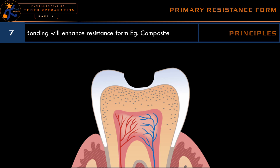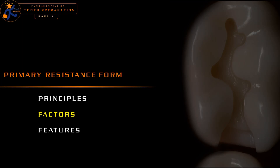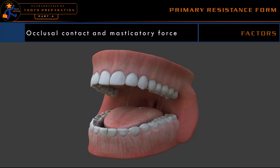The seventh principle employed in providing primary resistance form is: whenever possible, we should consider doing a bonding procedure — whether it is composite, amalgam, or whatever restoration we are trying to do. For example, a composite restoration cannot have a flat floor or box-shaped cavity, but the primary resistance form is provided by bonding. Whenever we find we cannot provide adequate depth or dimensions for an amalgam restoration, we should consider bonded amalgam to enhance the resistance form.